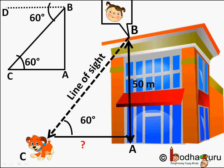And let us say the height of the building is 50 meters. Now in this case, say we need to find how far is the puppy from the base of the building, that is the distance AC we need to find.